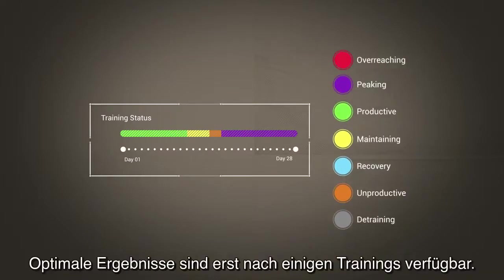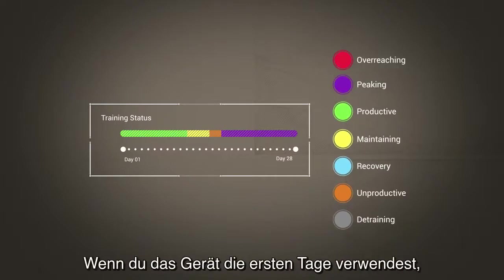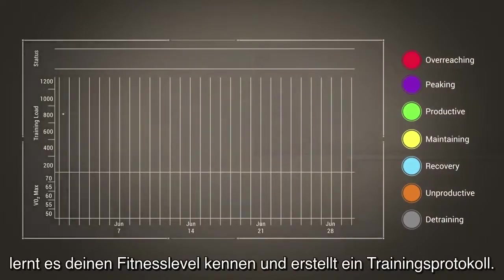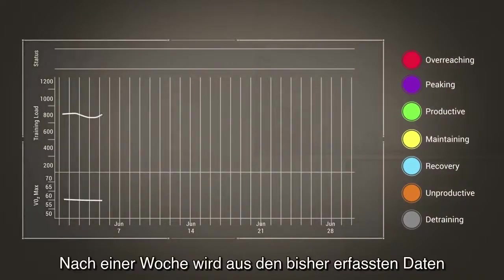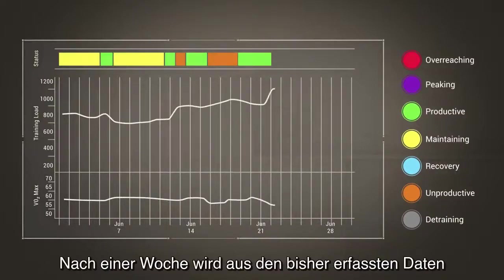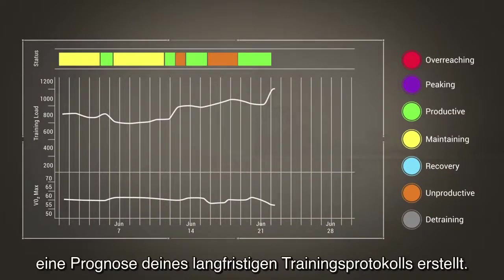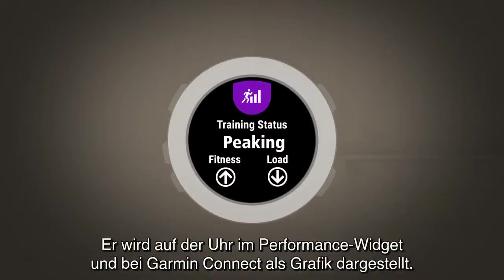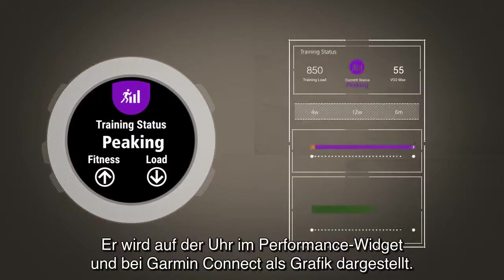Getting optimal results requires some training history. The first several days you use your device, it will be learning your fitness level and beginning to build your training history. After a week, it will use the data acquired thus far for the short-term to project your longer-term training history. By this point, you will begin to see a training status, which is shown on your watch on the performance widget and graphed on Garmin Connect.